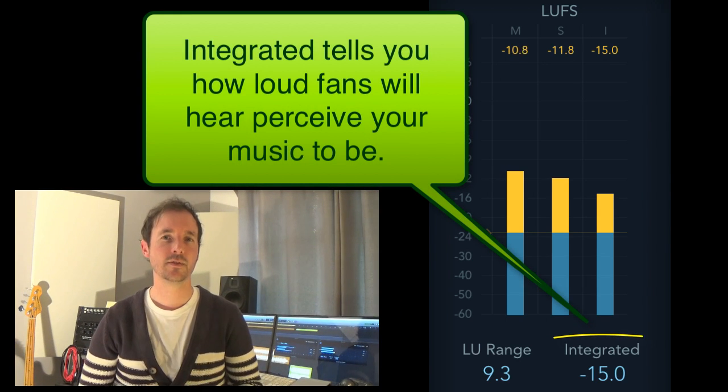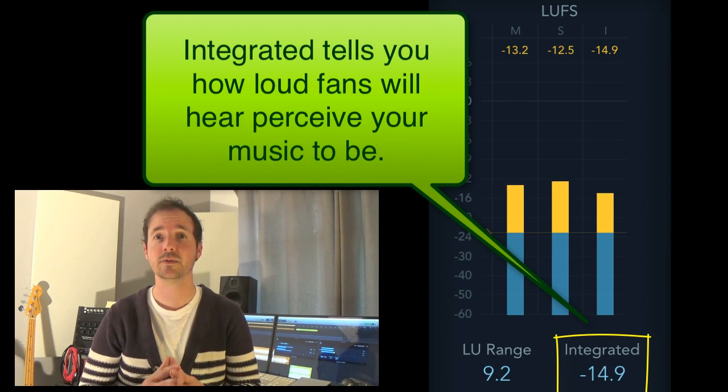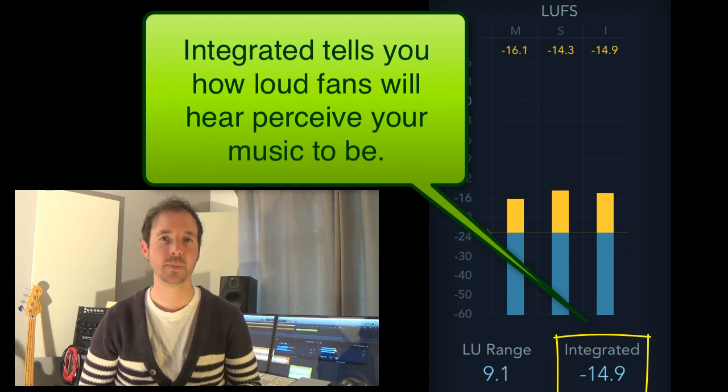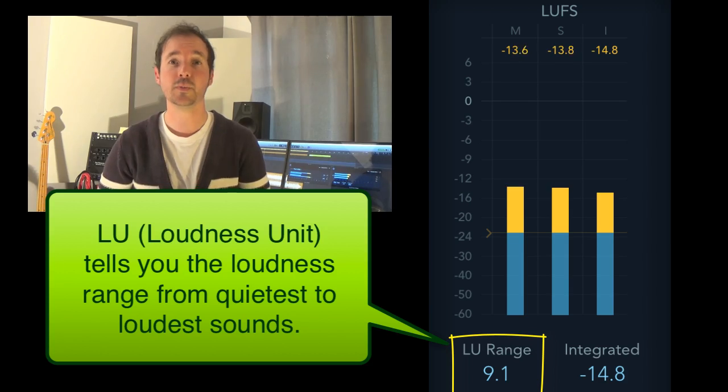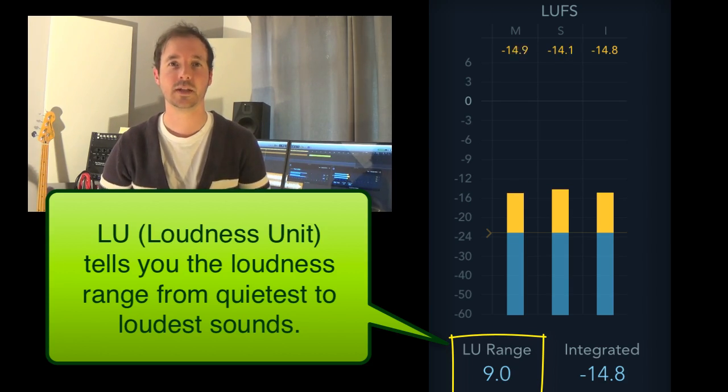So what does all this mean? Integrated values tell you how loud your listeners will perceive your music to be, and the LU range indicates how dynamic your music is, helping you to decide if wide dynamics is right for your music. You choose. Of course, fully mastered tracks will have a smaller LU range than a mix, depending on how much you limit the music.